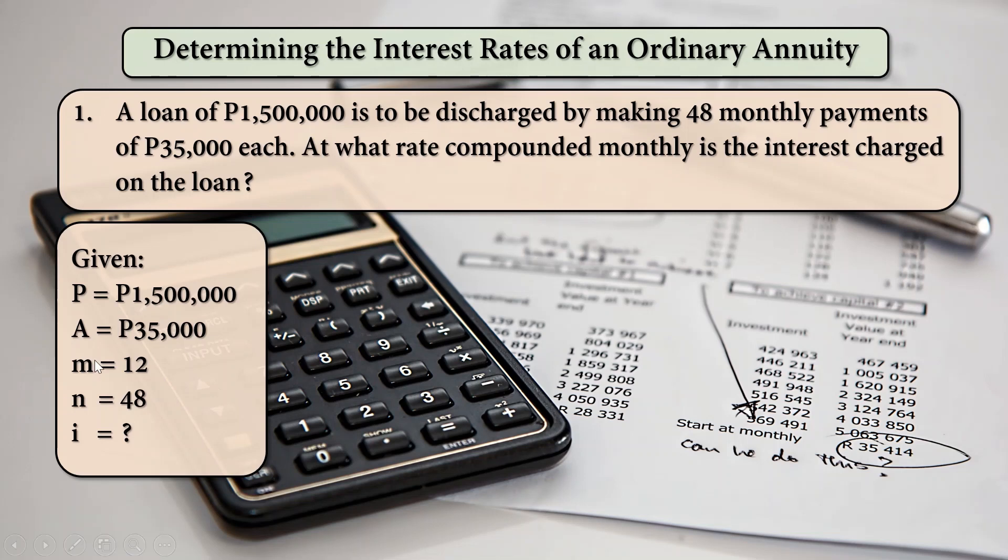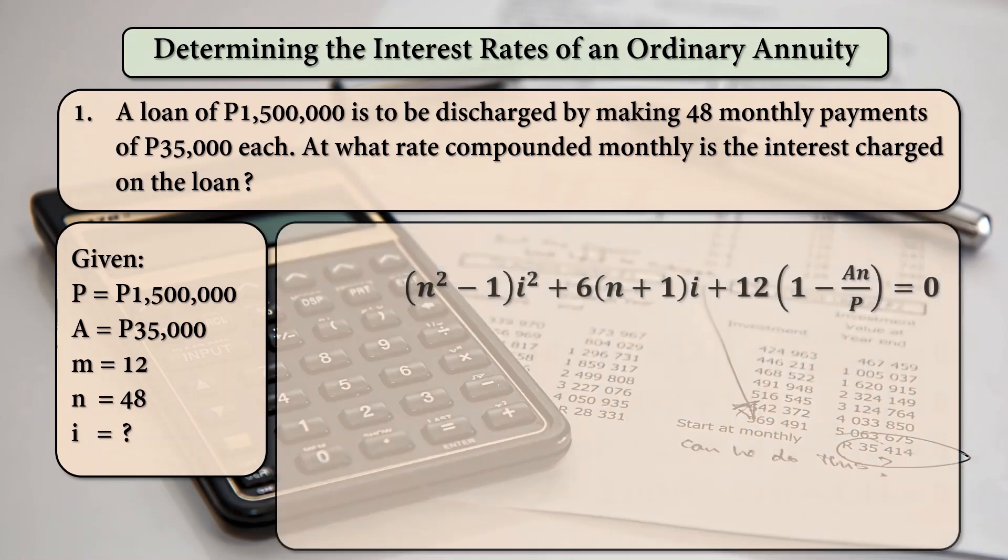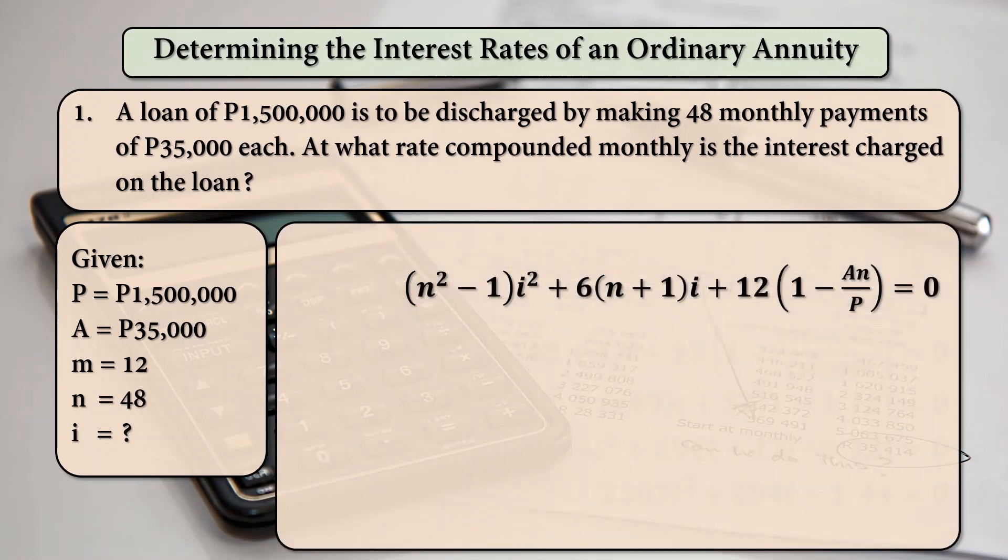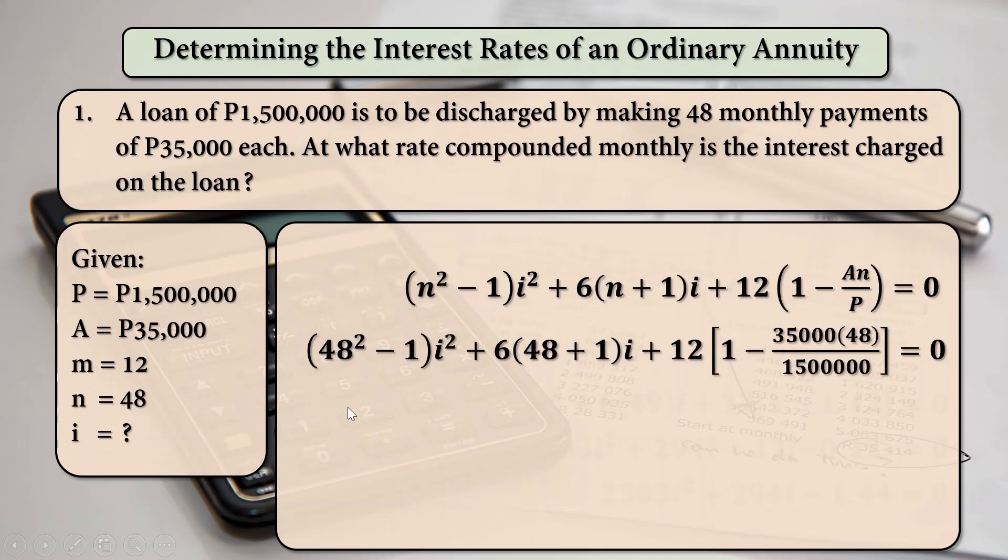We are not given here by T, which is in years. The N is already given, which is 48 monthly payments, and we are going to solve for i. Using the first equation, if P is given, and then substituting for the values of N, and A, and of course P. N is 48, A is 35,000, and P is 1.5 million here in the denominator.